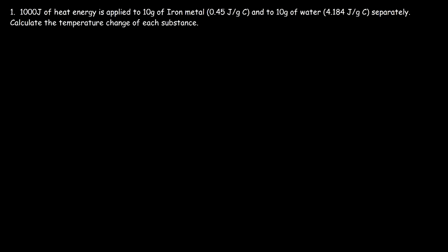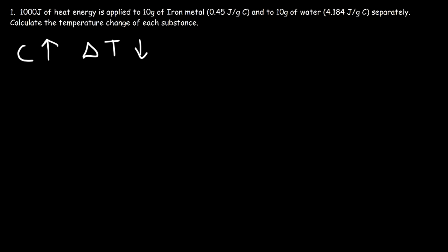Let's try this problem. A thousand joules of heat energy is applied to 10 grams of iron metal and to 10 grams of water separately. Calculate the temperature change of each substance. As heat capacity increases, the temperature change should decrease. Substances with a very high heat capacity will have a very low temperature change. Water has a very high specific heat capacity, so it should experience the lowest temperature change.